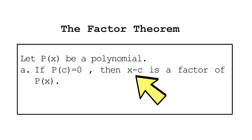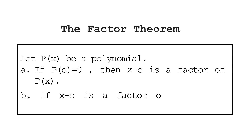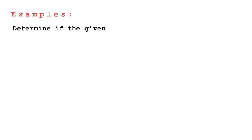For statement (b), this is just the reversed interpretation of statement (a): if the given divisor x minus c is a factor of the given polynomial, then p(c), which is the remainder, must be equal to zero. Let us determine if the given binomial is a factor of the polynomial function.